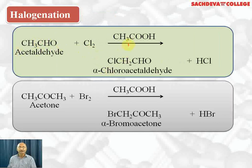The halogenation reaction takes place in the presence of acetic acid. Acetone reacts with bromine in the presence of acetic acid: alpha hydrogen is removed, giving alpha-bromoacetone.